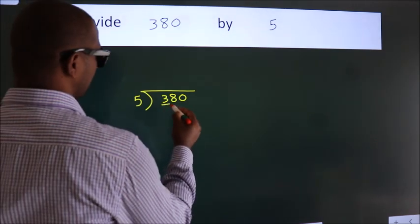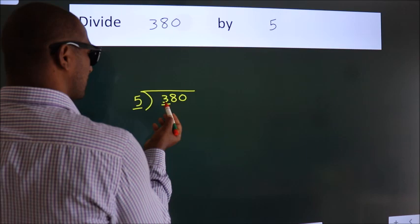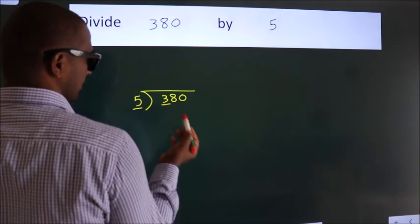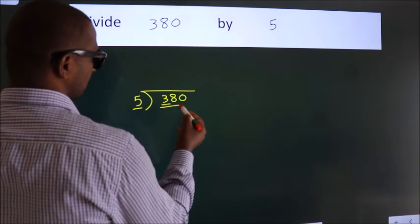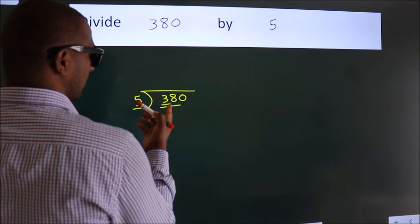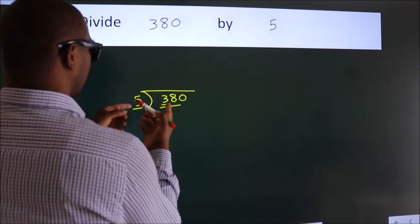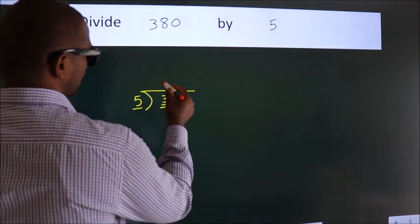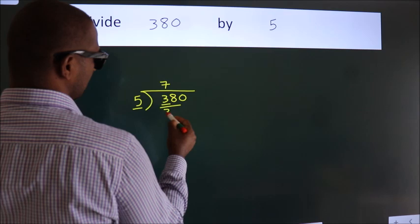Next, here we have 3. Here 5. 3 is smaller than 5, so we should take 2 numbers: 38. A number close to 38 in the 5 table is 5 times 7 equals 35.